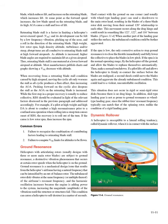If RPM is low, the only corrective action to stop ground resonance is to close the throttle immediately and fully lower the collective to place the blades in low pitch. If RPM is in the normal operating range, fly the helicopter off the ground and allow the blades to re-phase themselves automatically, then make a normal touchdown. If a pilot lifts off and allows the helicopter to firmly re-contact the surface before blades are realigned, a second shock could aggravate the unbalanced condition, leading to violent, uncontrollable oscillation. This situation does not occur in rigid or semi-rigid rotor discs because there is no drag hinge. Skid-type landing gear is not as prone to ground resonance as wheel-type landing gear.